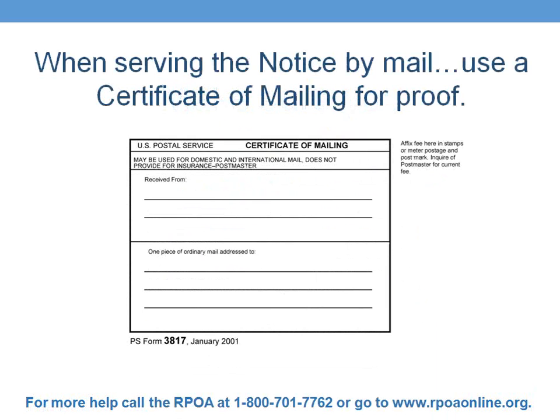When serving a notice by mail, you should use a certificate of mailing. This is not registered mail or certified mail — it's a small form obtained at the post office for a small fee. You'll complete the form by filling in the landlord's mailing address in the 'receive from' box and the tenant's address in the 'address to' box. The post office will then stamp and date the form, which can be used as proof of service in court.